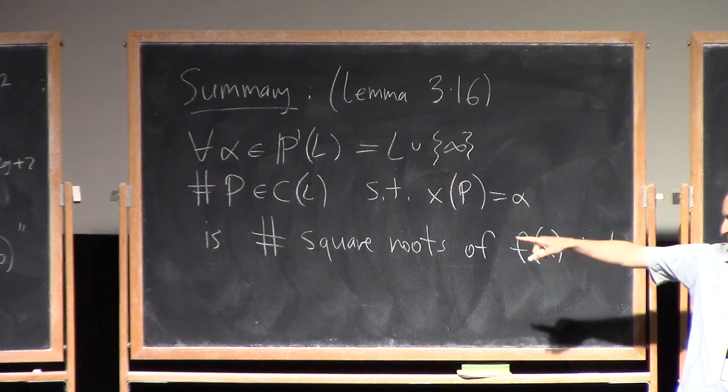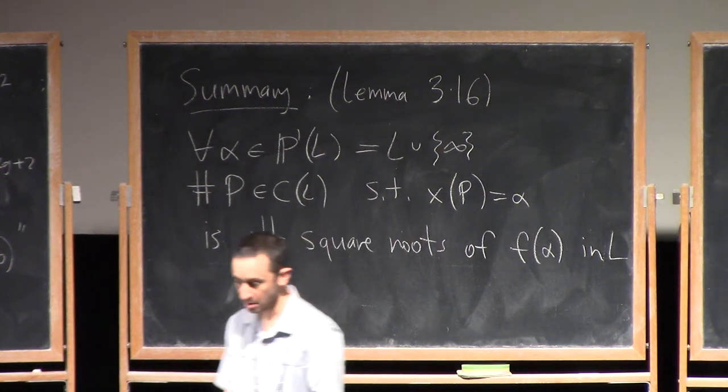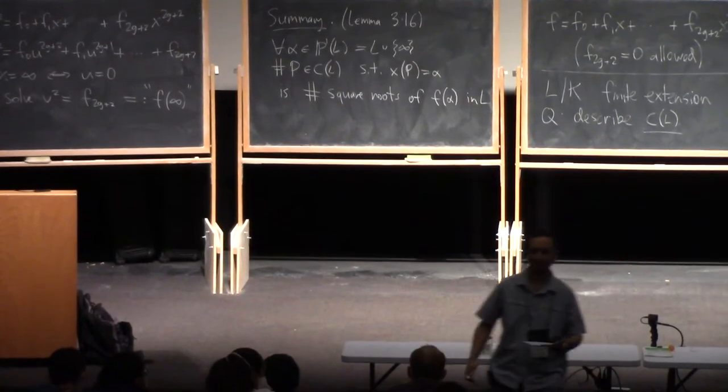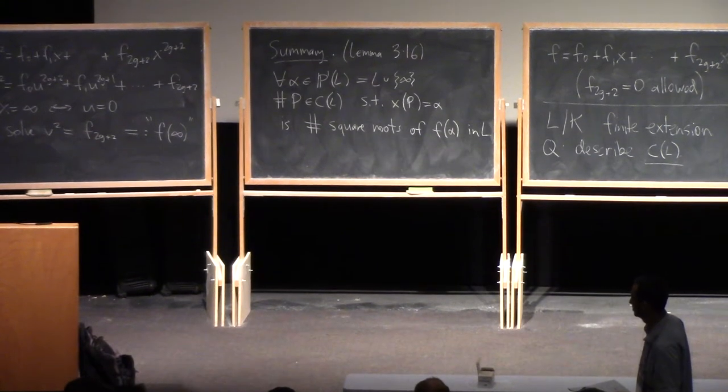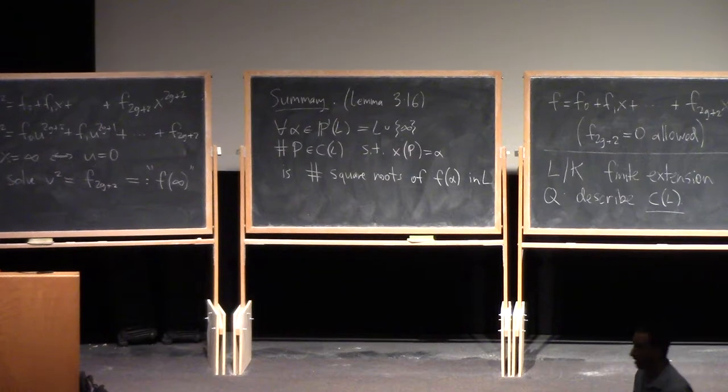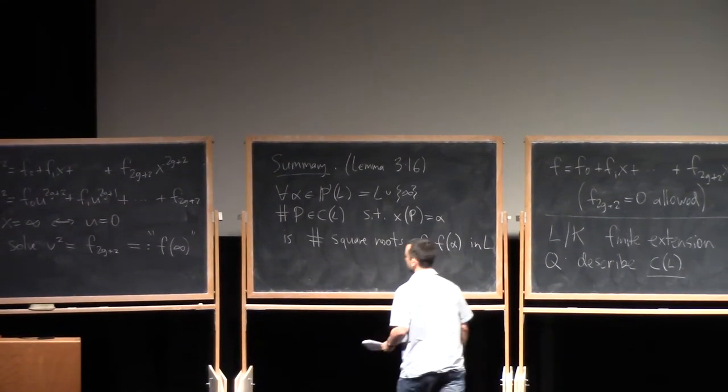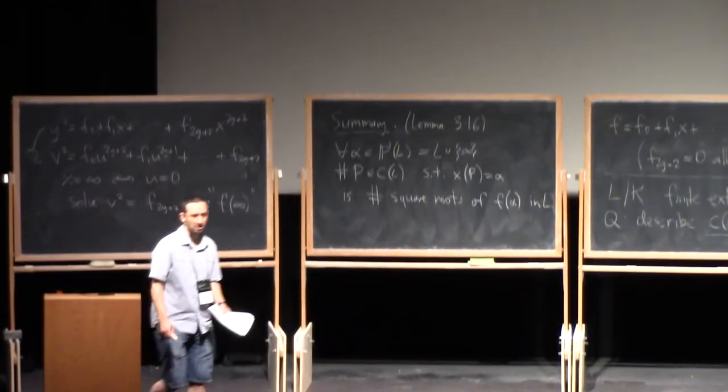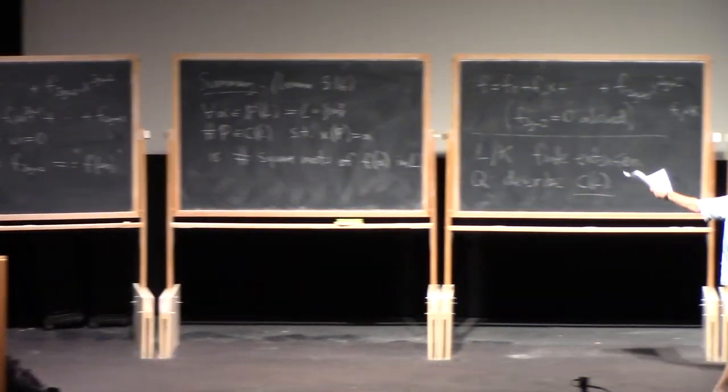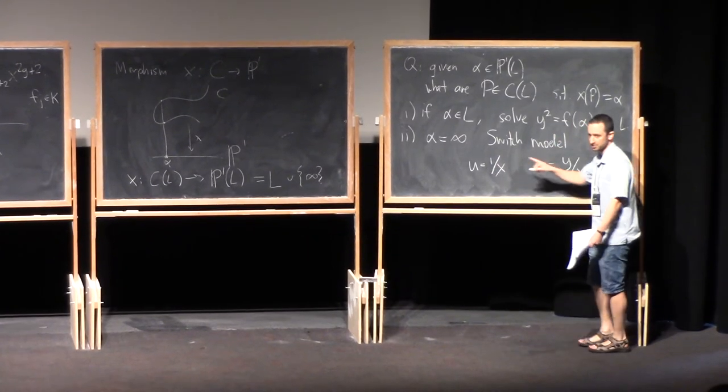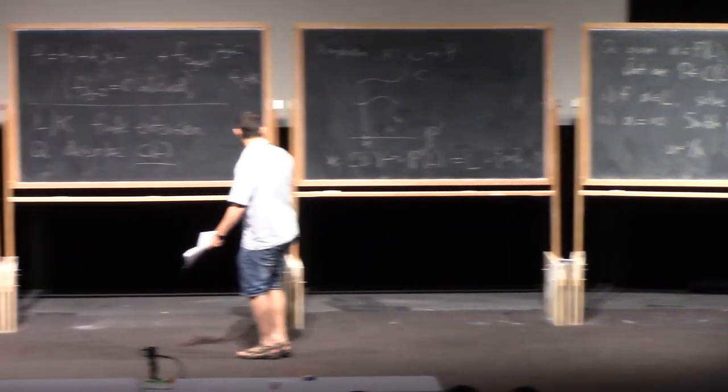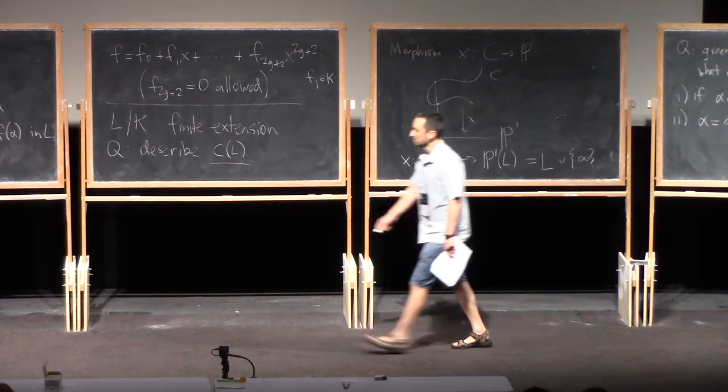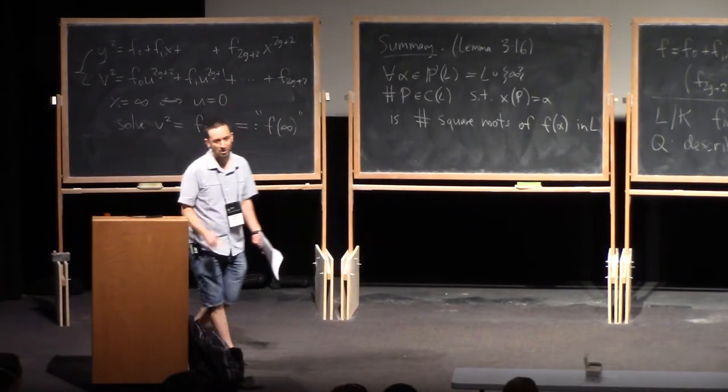And remembering what F infinity means, it means that leading coefficient. When I solve, what is Y? So that point does not really have a Y coordinate. What's going on is these two equations are two different affine pieces of the curve, and we're gluing together. When X is a finite value in L, then you get a value of Y. When X is infinity, then you have to switch to this other model, and you get a U and a V coordinate, but you don't necessarily get a Y coordinate.